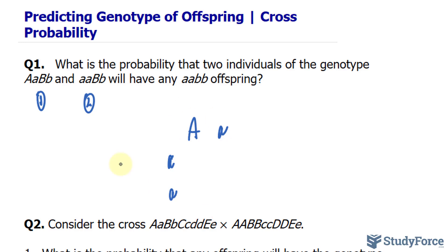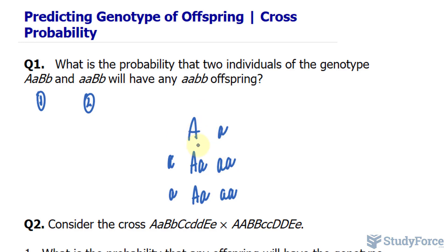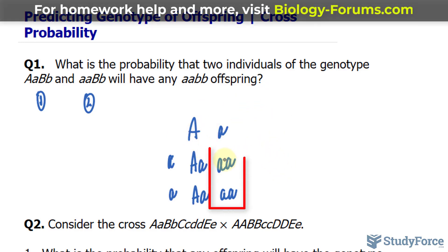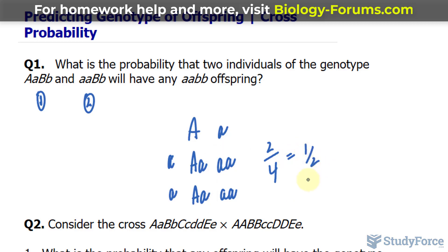If we do a monohybrid cross here, we get capital A little a, little a little a, capital A little a, and little a little a. The probability that the offspring will inherit little a little a, given this cross, is two out of four, or one half. So there's a 50% chance that the offspring will have the genotype little a little a.